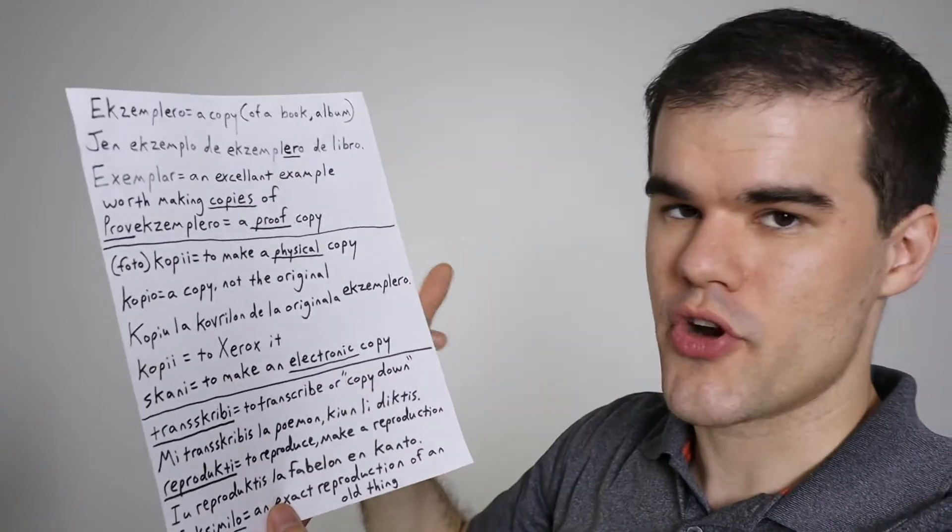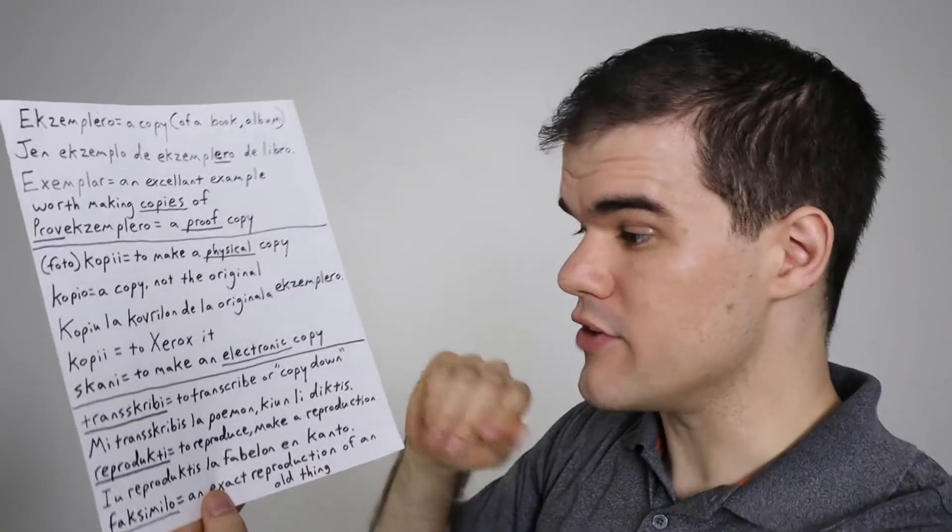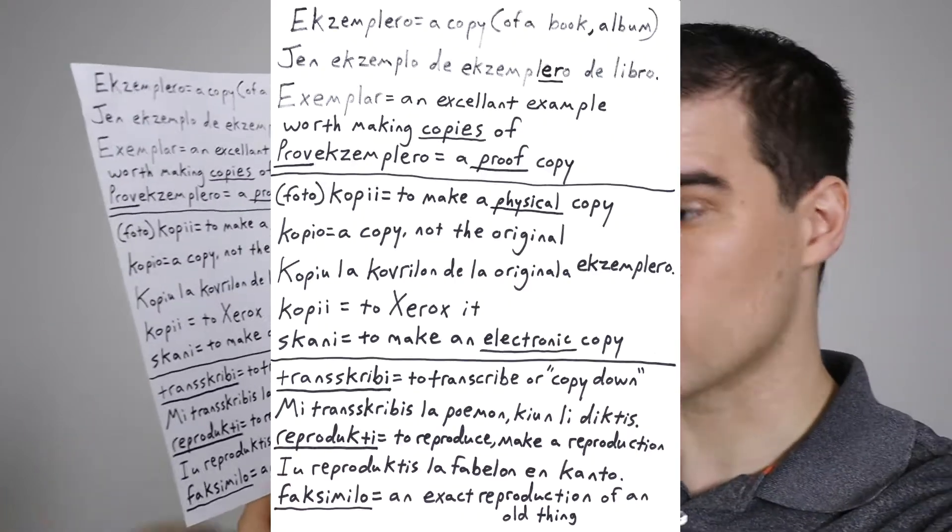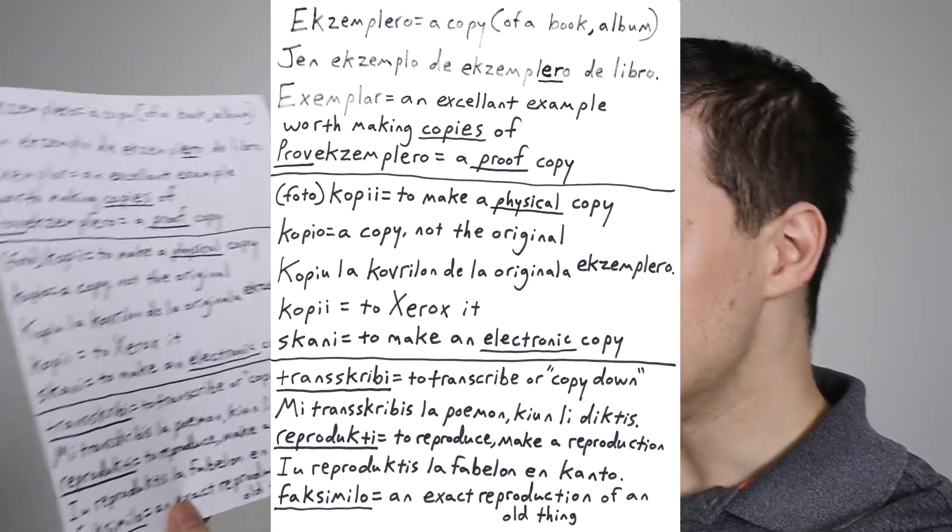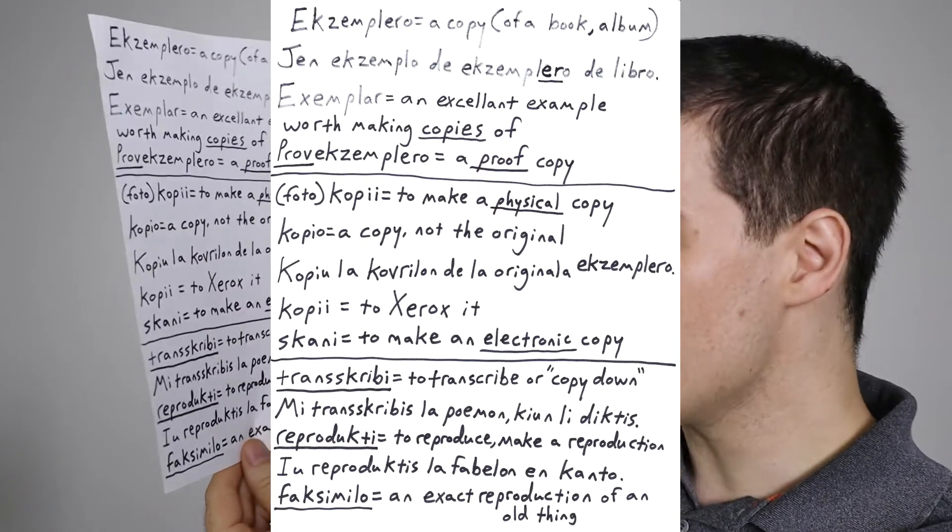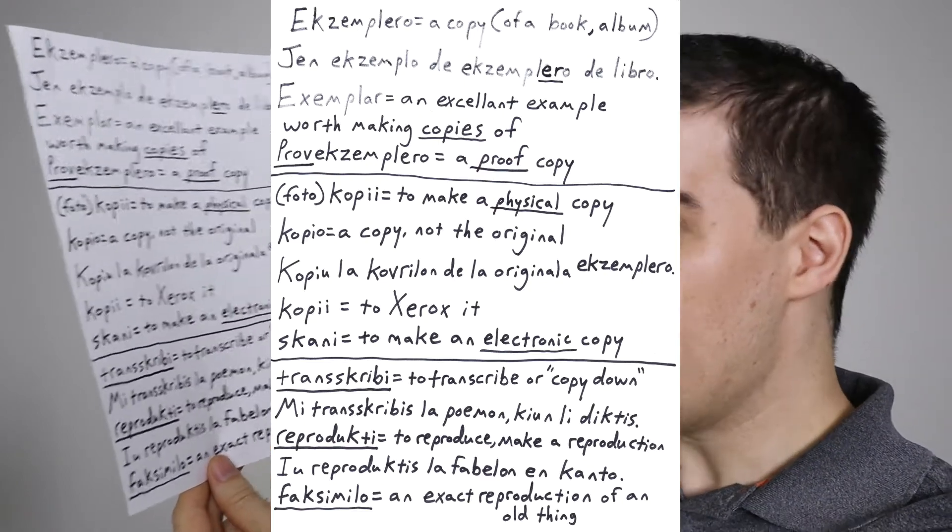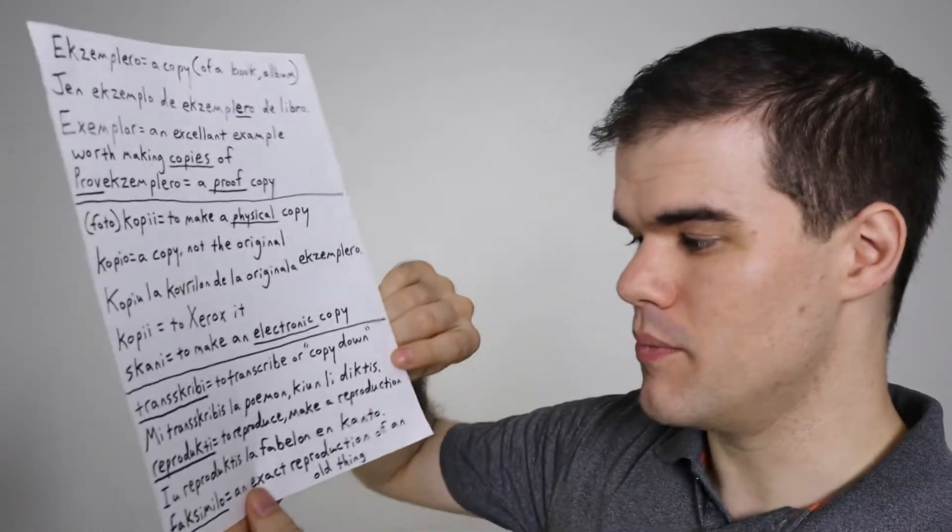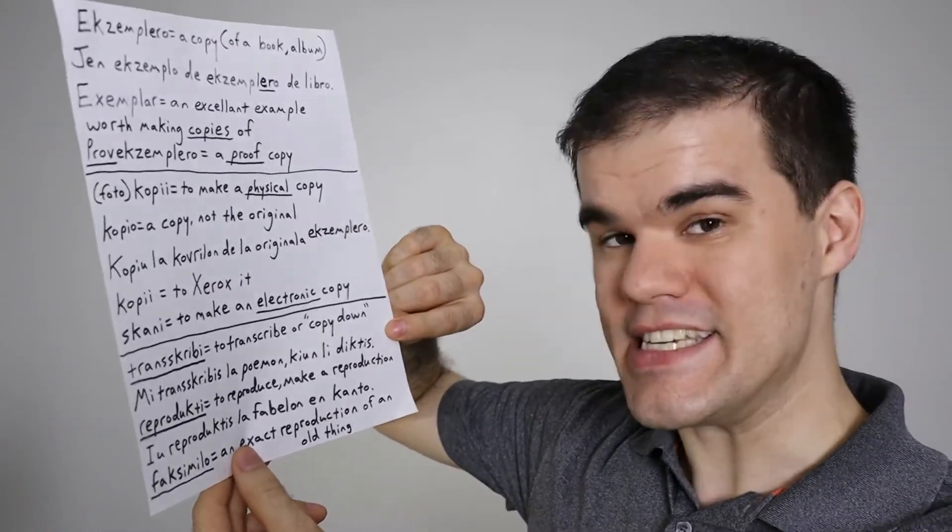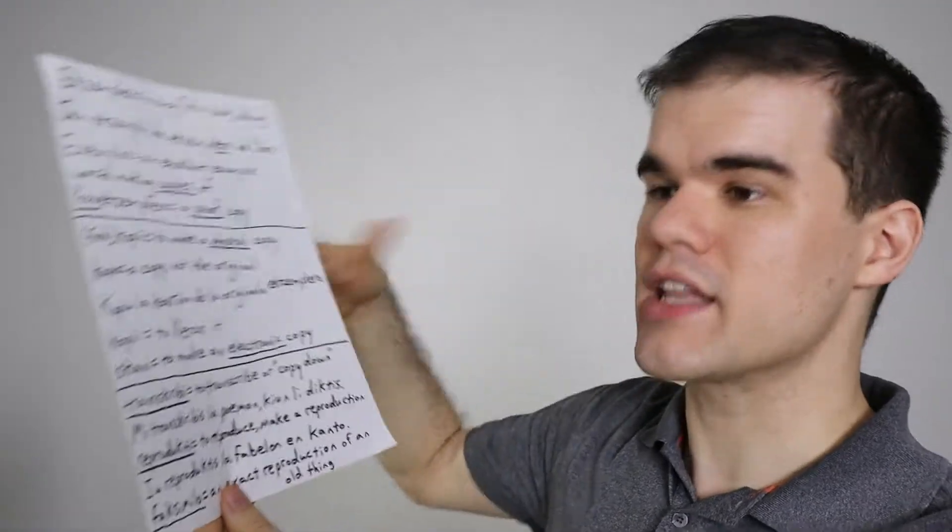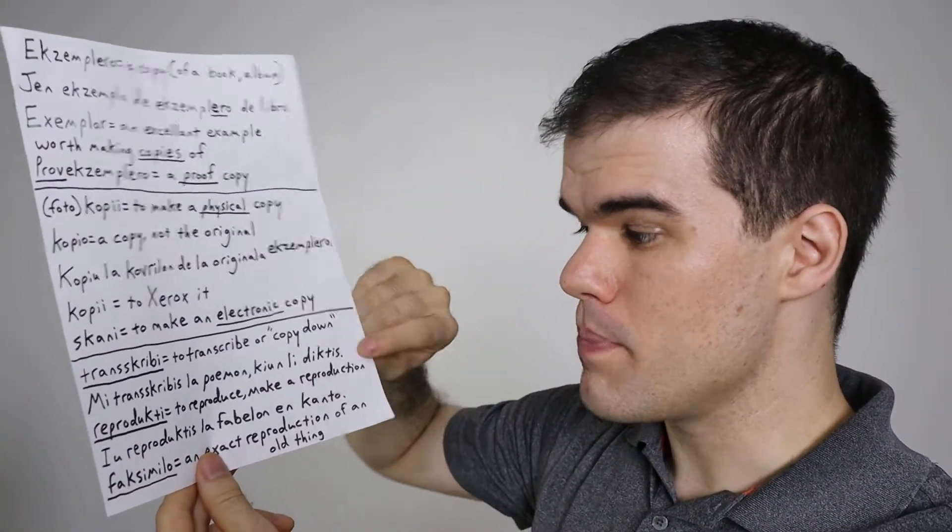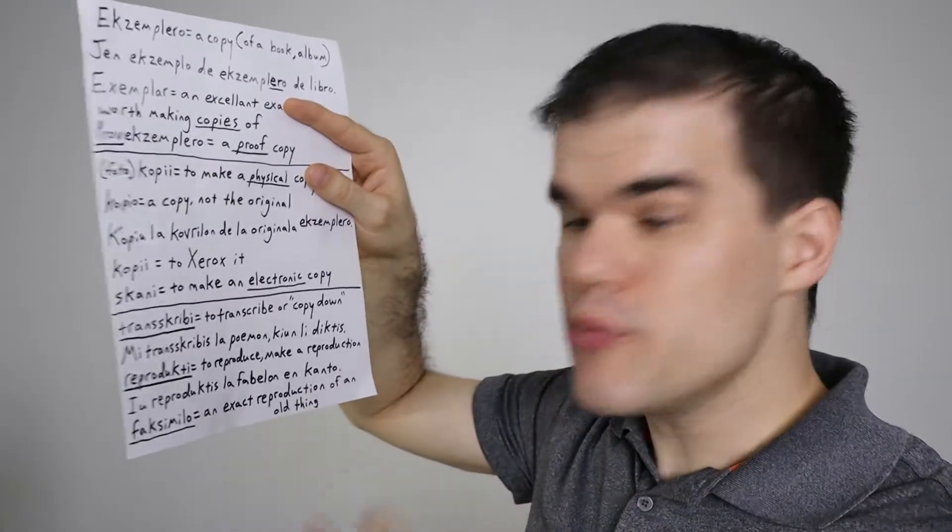Here's a word I don't use very often, but it's a good word to know and one to have at your disposal. Transcribi. That is to transcribe or to copy down something. Mi transcribis la poemon ciun li dictis. I transcribed the poem which he dictated. And I'm slipping in this little bonus vocab word here. Dicti is to dictate something, to say aloud with the intention of it being copied down. So I transcribed the poem. These two words you're not going to use very often, but good to know.